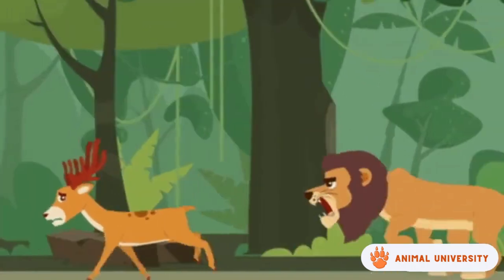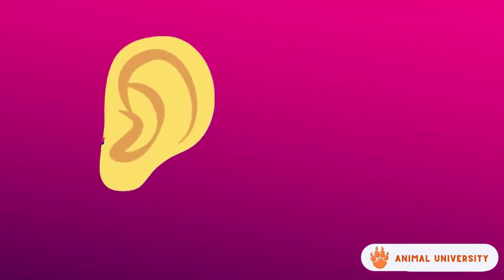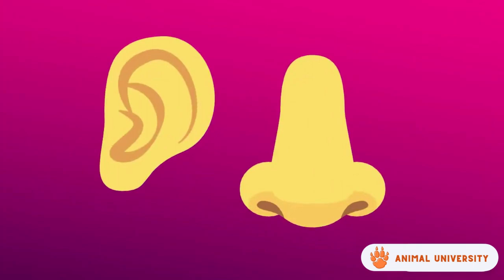Artiodactyls arrived in South America in the Pliocene through the Isthmus of Panama. These animals have eyes on their sides so that they can see predators coming from behind and also have a good sense of hearing and smell like a lot of animals.